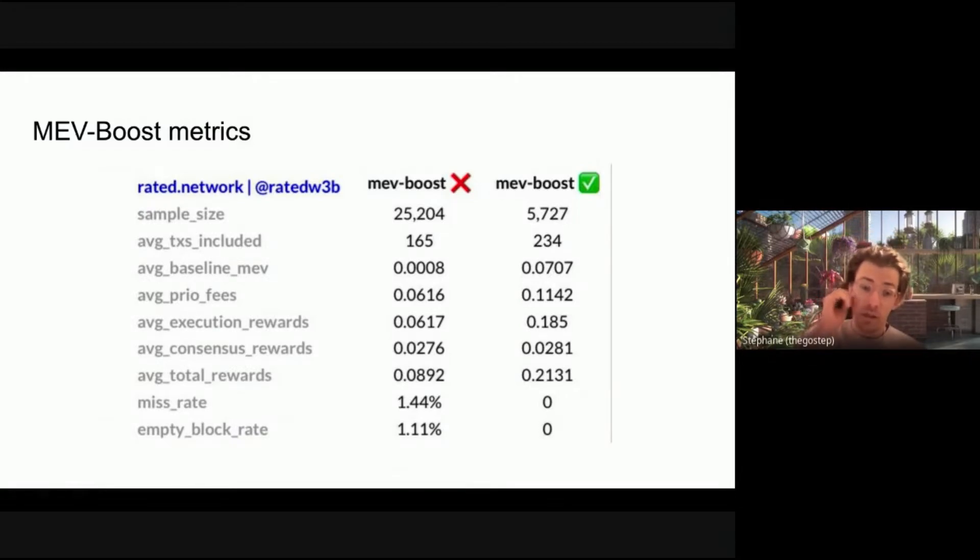So 2.3 times, 2.5 times the reward is not an insignificant number. And this is empirical data, right? Like this is what we've seen over the course of last week. One question that I've been receiving lately is, well, there's only 20 or so percent of the network that's connected to this. How is this number going to change over time as the percentage of the network using MevBoost increases? My answer is, I think it'll be pretty stable if not increase. Here's the reason why.